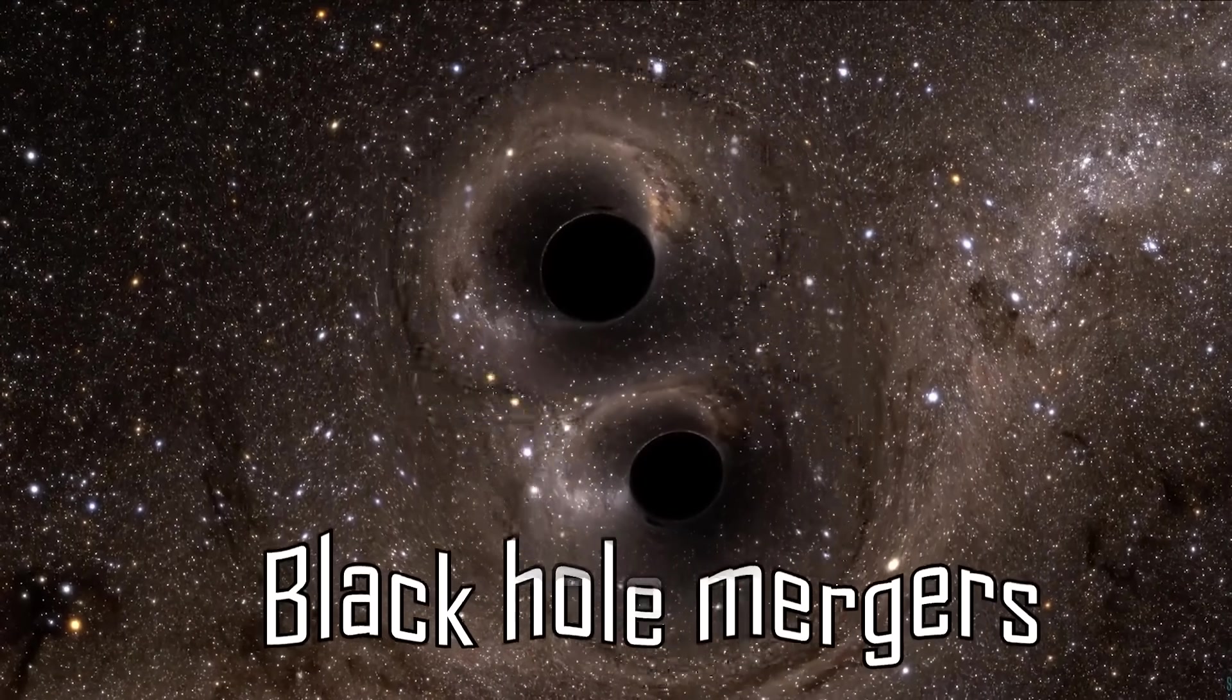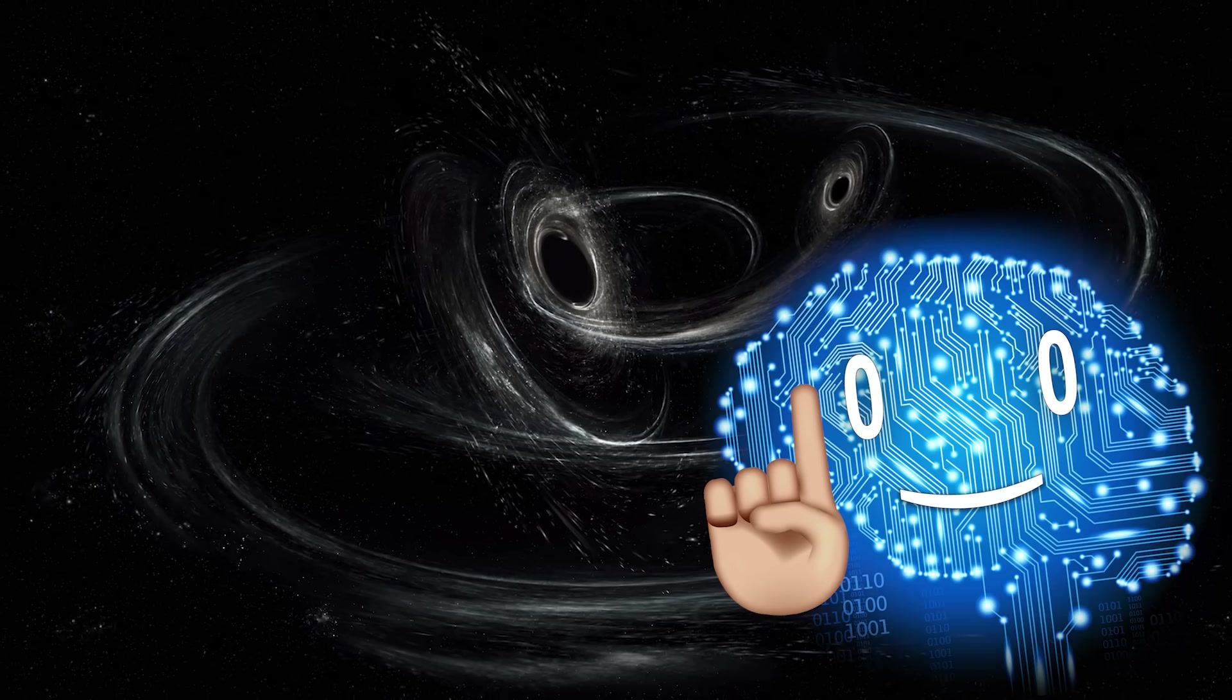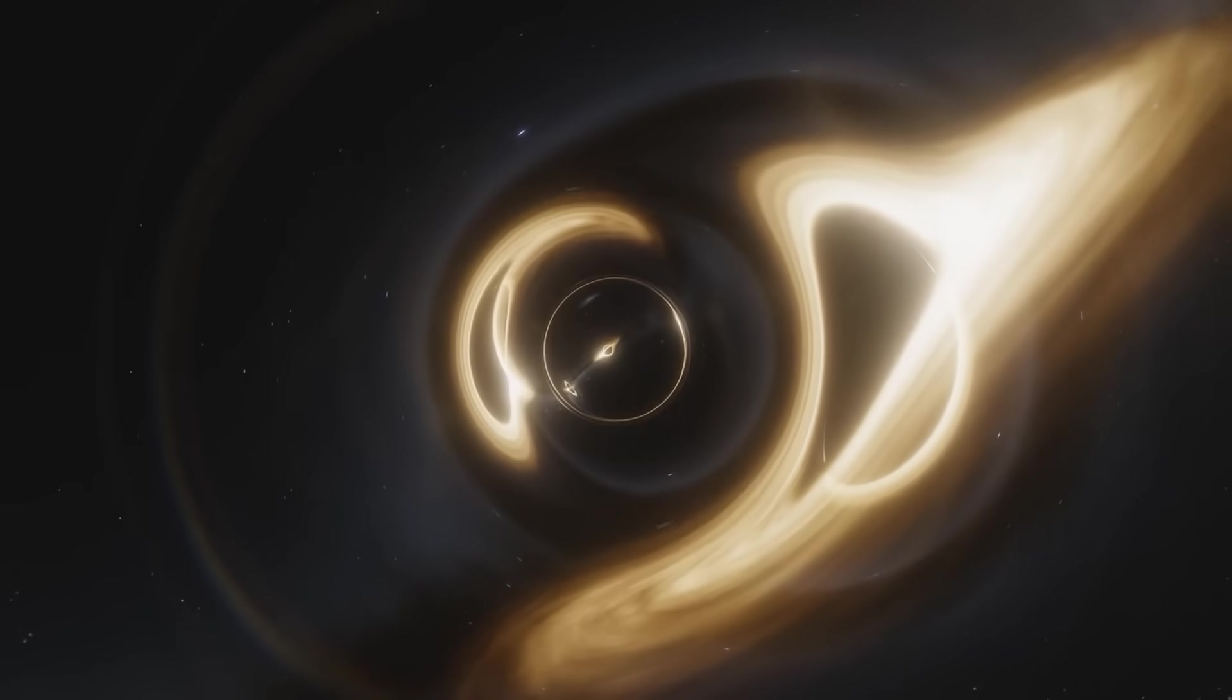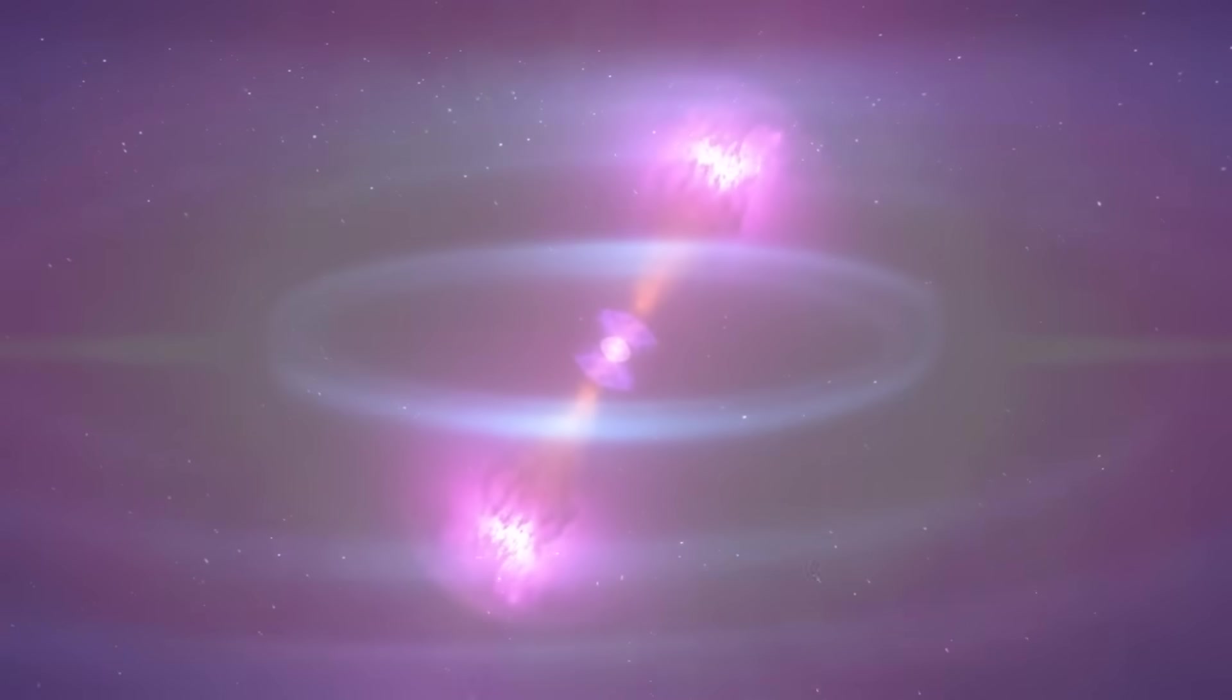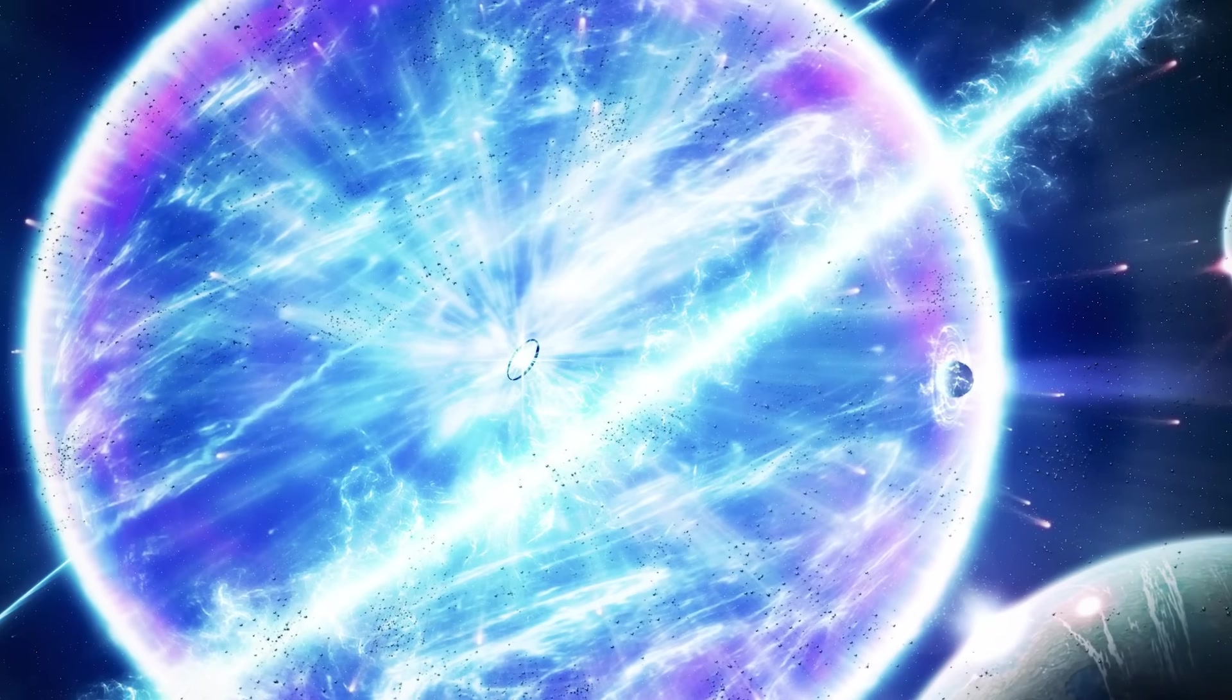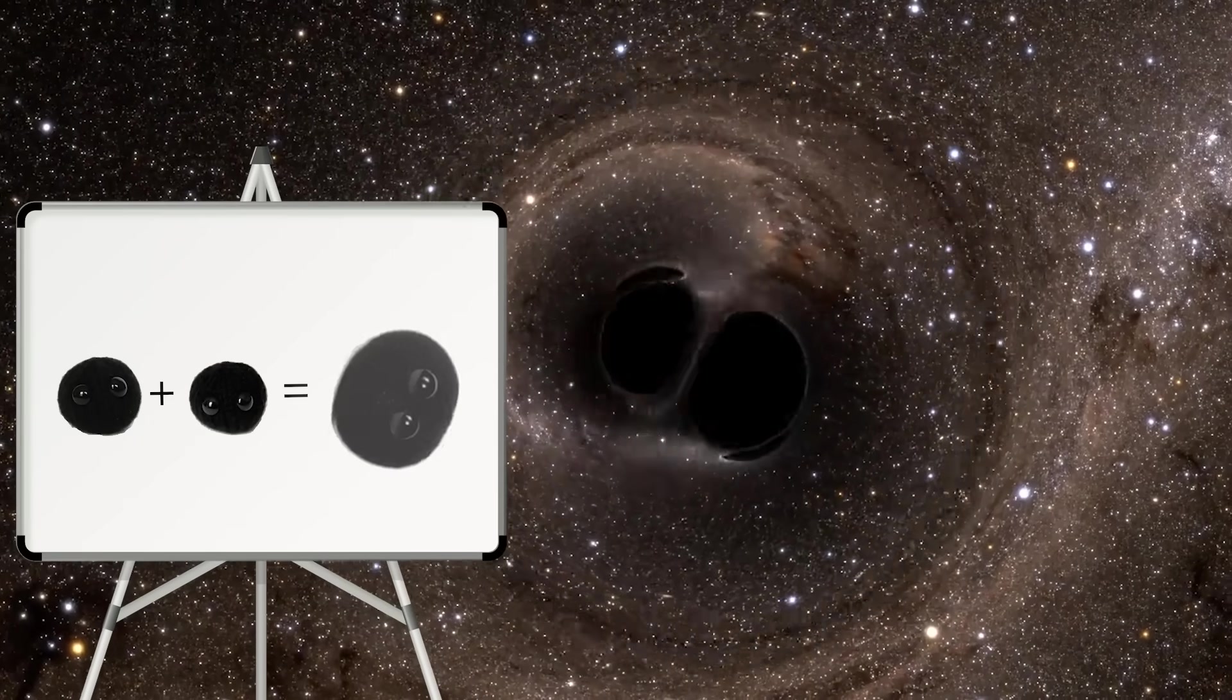Black hole mergers. Now perhaps the least bright entry in this list, but also one of the most energetic. If you had two black holes about to merge, there would be no intense flashes of light, no sudden gamma ray bursts, no hypernovae, almost no nothing. Just two black blobs becoming a bigger black blob.